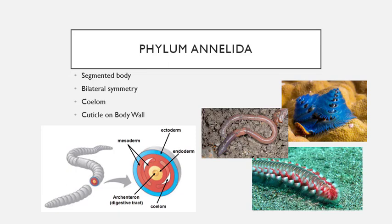Next is phylum Annelida — these are our worms. Believe it or not, this worm on the right of the screen is called a Christmas tree worm. There are a lot of really cool marine worms out there, and this also includes our earthworms and inchworms on land. One of the characteristics that bind this group together is they have a segmented body — all these different segments going through their body. They also have bilateral symmetry. If I cut a worm hot dog style, straight down the middle, I'll have the exact copy on each side.